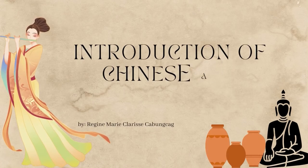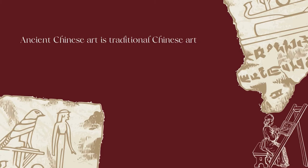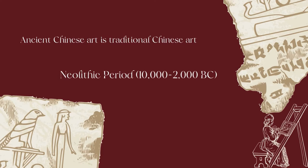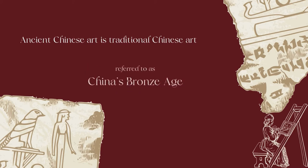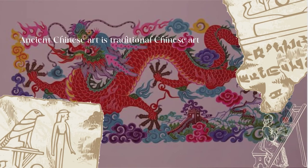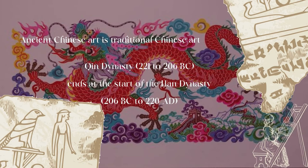Ancient Chinese art is traditional Chinese art made beginning in the Neolithic period, which is 10,000 to 2,000 BC. It continues through the Shang dynasty, circa 1600 to 1050 BC, and the Zhou dynasty, 1050 to 221 BC, which together are often referred to as China's Bronze Age. For Chinese art, the definition of ancient generally goes through the Qin dynasty, 221 to 206 BC.